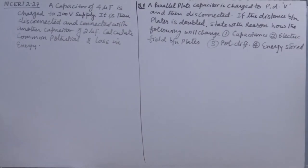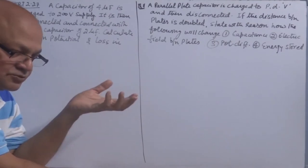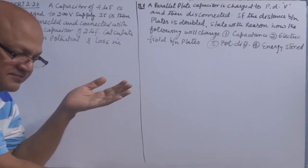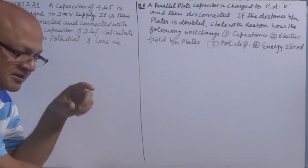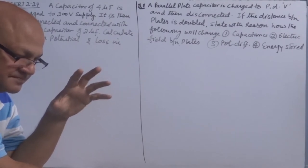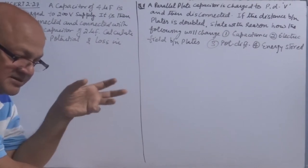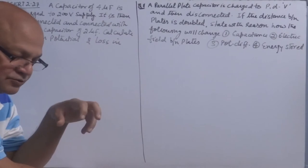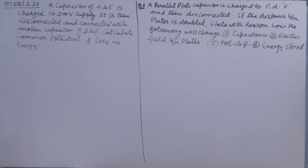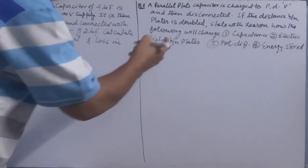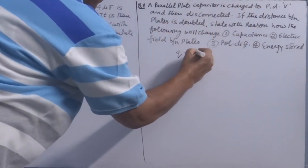Remember two things: when you charge a capacitor with a certain potential source V and after charging if you disconnect it, then charge across the capacitor remains constant and potential will change. In the second case, if the capacitor remains connected with a potential difference supply or source, then potential difference will be constant. Since here the supply is disconnected, Q will be constant.